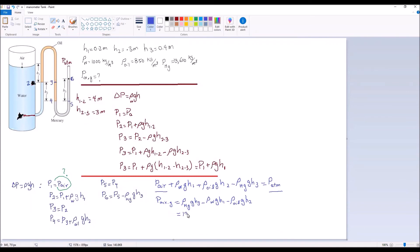Now it's ready for plugging in numbers. Rho mercury, 13,600 times 9.8 times 0.4 minus rho water 1000 times 9.8 times 0.2 meters minus rho oil 850 times 9.8 times 0.3.